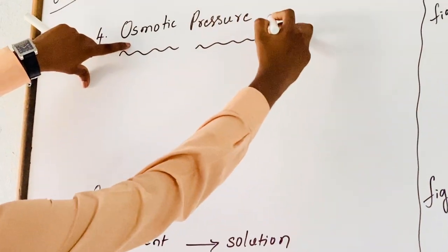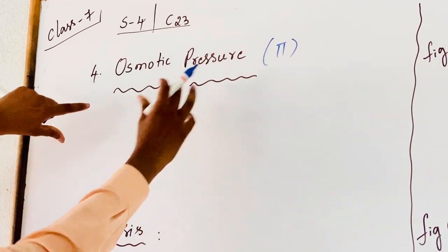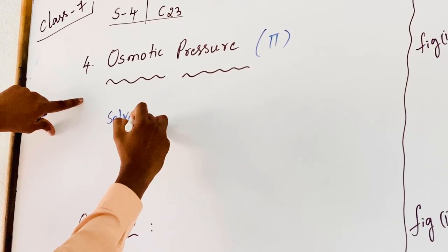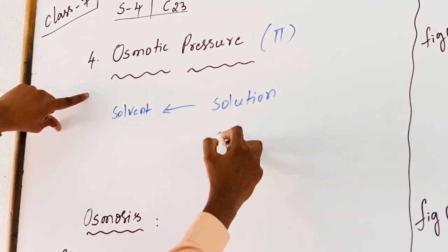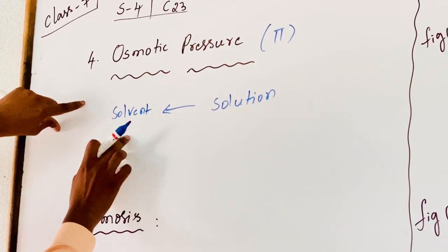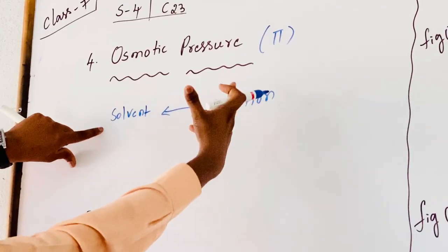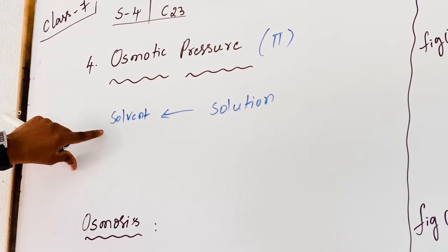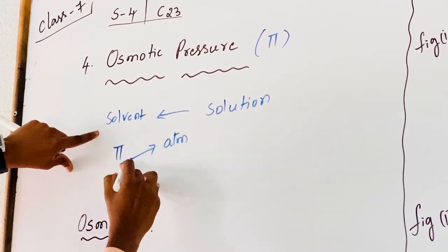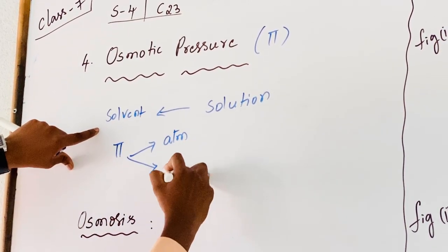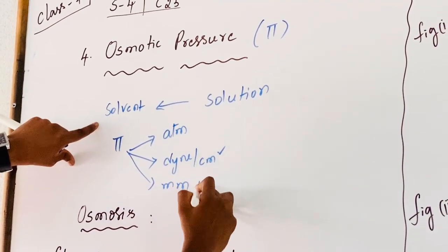Osmotic pressure is represented by the symbol Pi. It is the pressure at which the solvent molecules are driven back from the solution of higher concentration — that is, from the high concentration solution to the low concentration solution. Osmotic pressure is expressed in units of atmosphere, dynes per centimeter square, or mm of Hg.